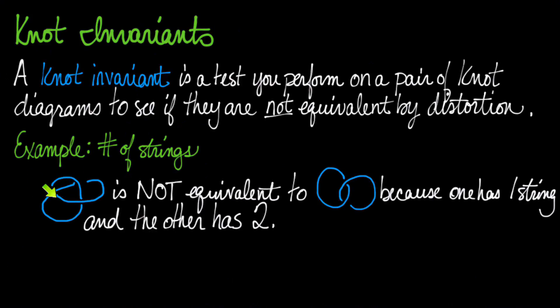And so this shape here, which is a single loop, is not equivalent by distortion to this shape, this link over here, because the one has one string and the other has two strings. They are non-equivalent.